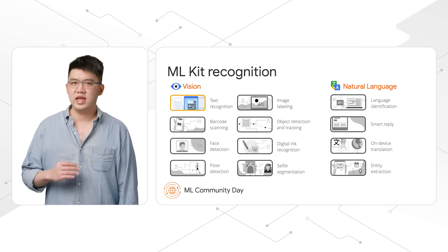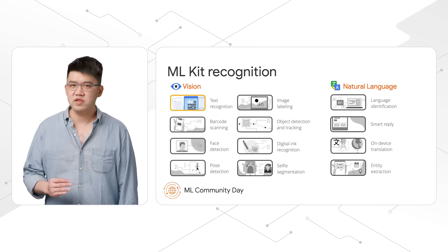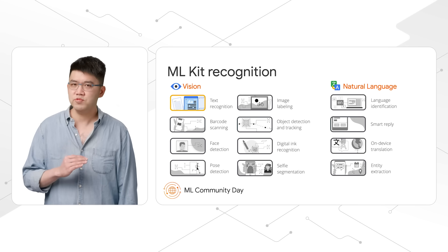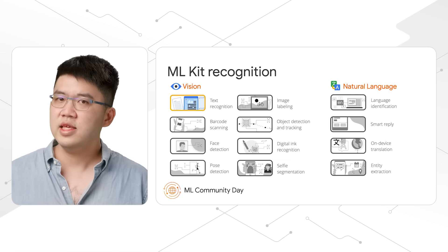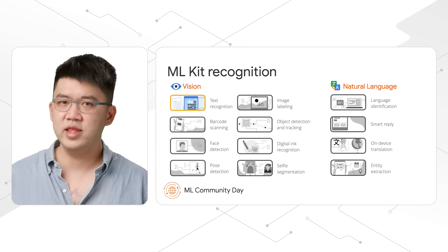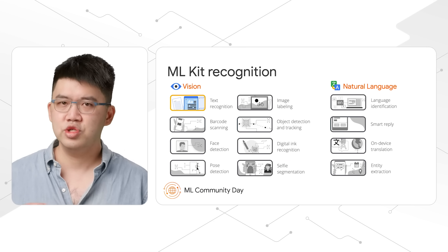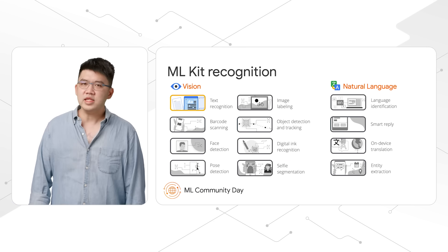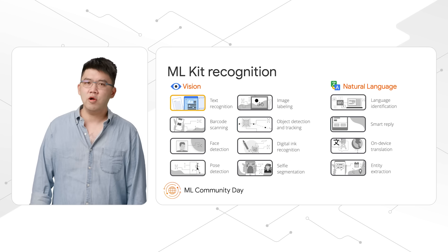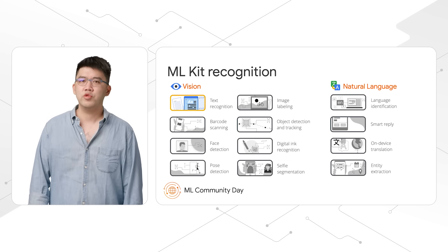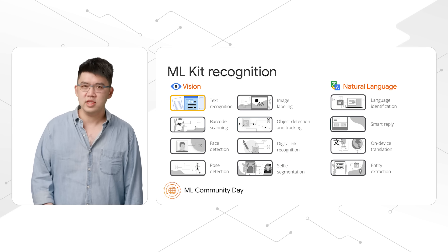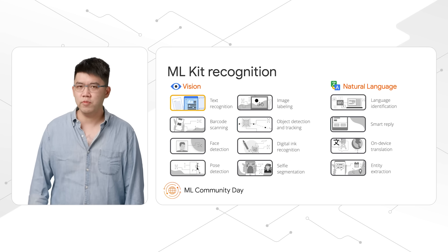You can recognize and extract text from images using ML Kit's text recognition API. We added new language support for Chinese, Devanagari, Japanese, and Korean scripts. Text recognition now also offers deep paragraphing support to group text into meaningful blocks.